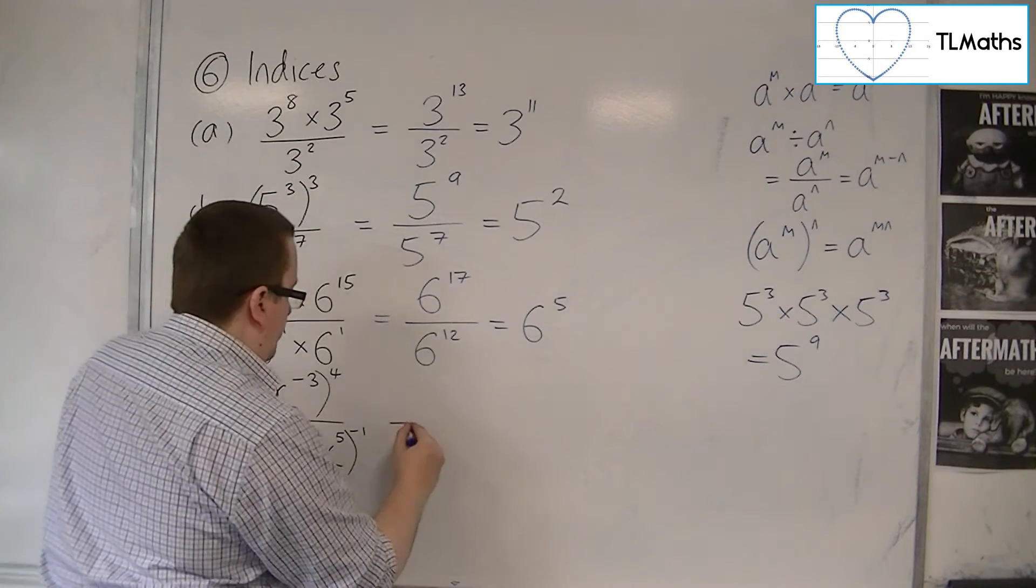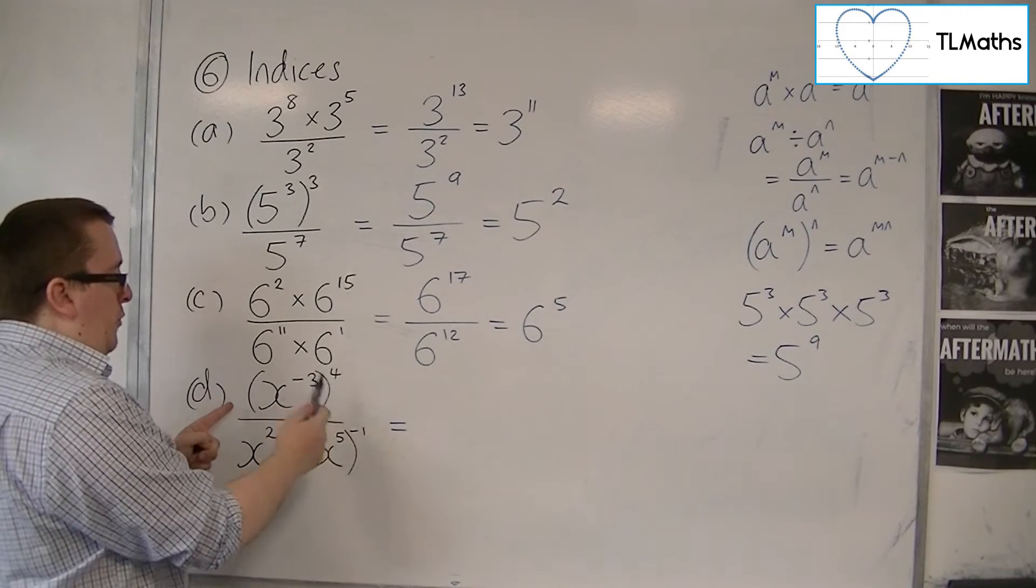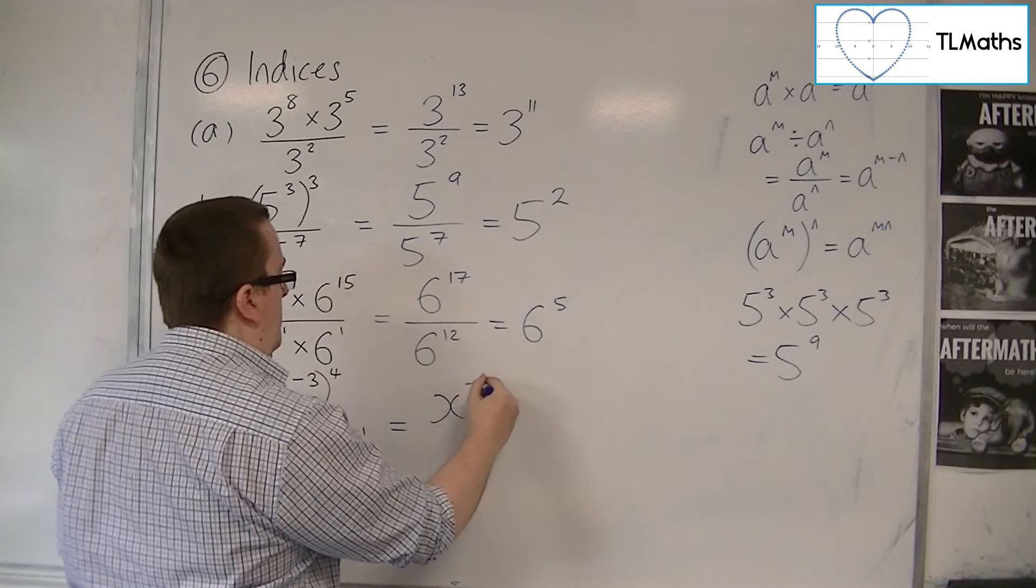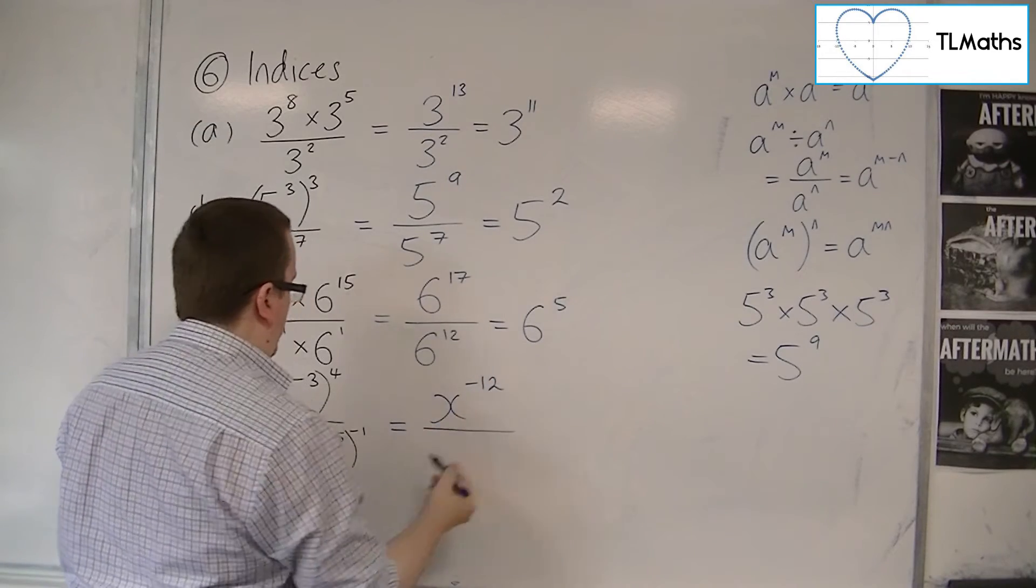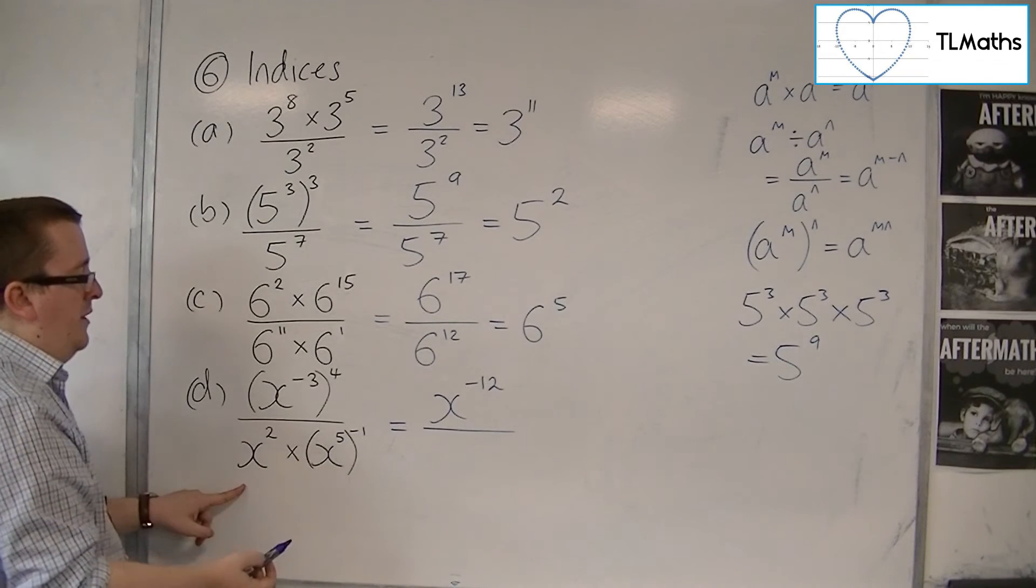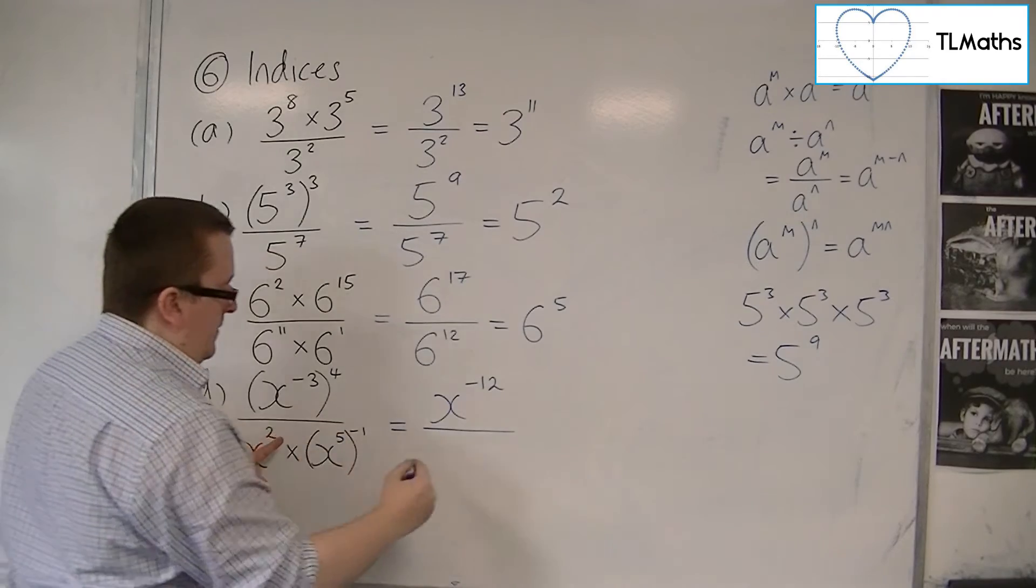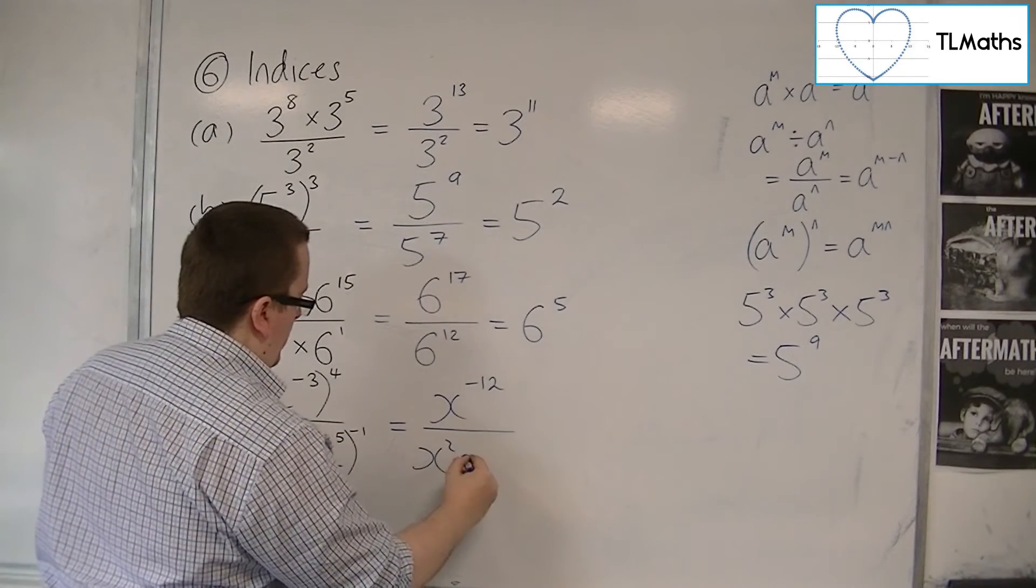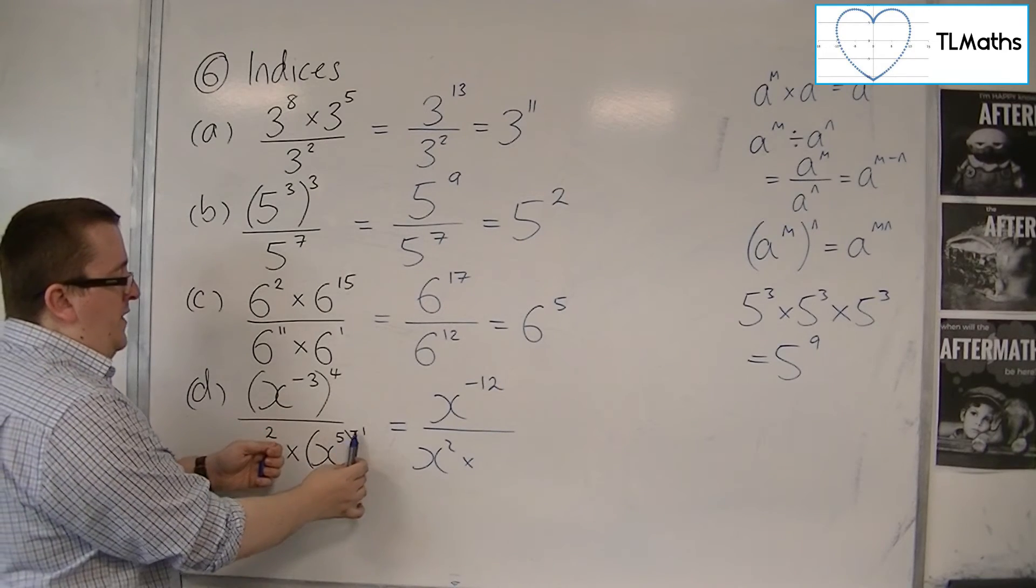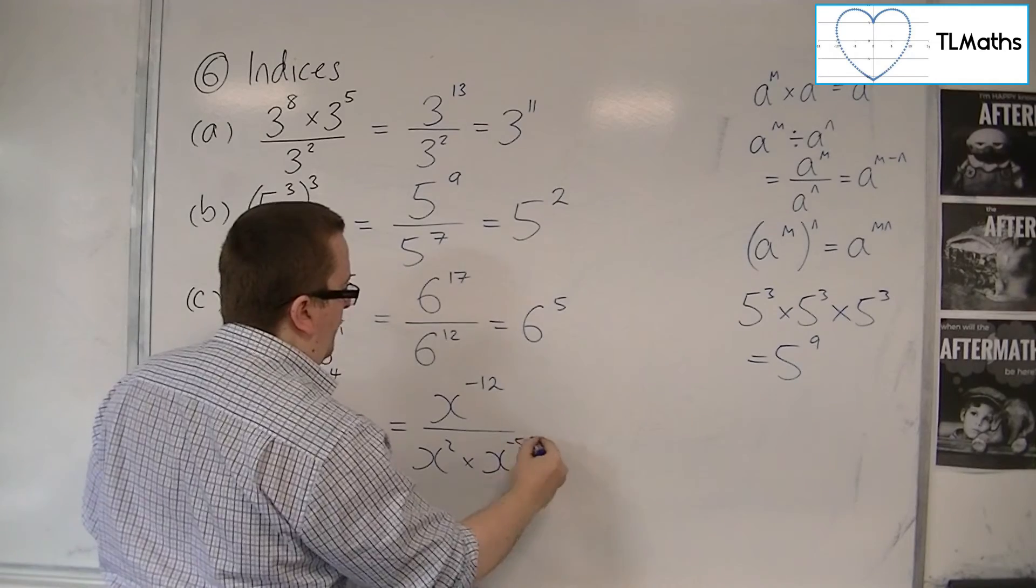For this last one, we have (x^-3)^4. These indices get multiplied together, giving us x^-12 in the numerator. In the denominator, we have x^2 × (x^5)^-1. Dealing with this first, the 5 and -1 multiply together, giving us x^-5.